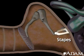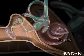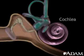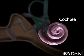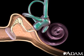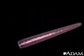As the stapes moves, it pushes a structure called the oval window in and out. This action is passed on to the cochlea, which is a fluid-filled snail-like structure that contains the receptor organ for hearing. Let's unwind the cochlea to get a closer look.